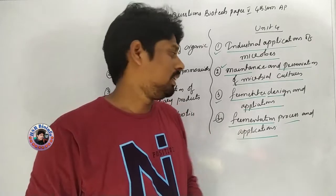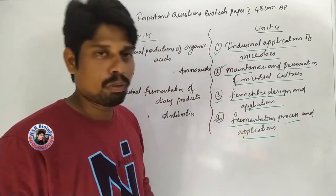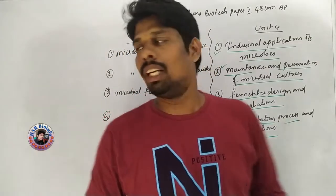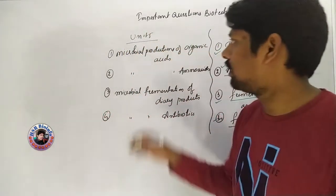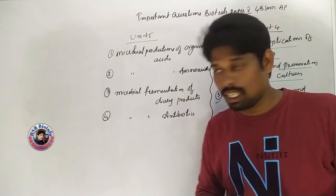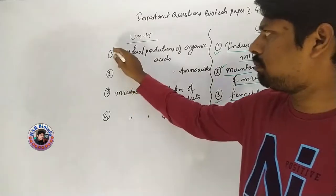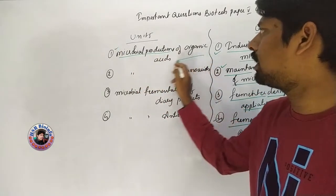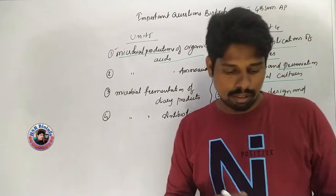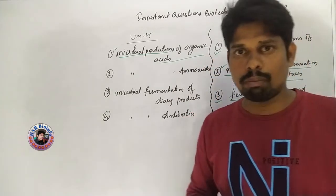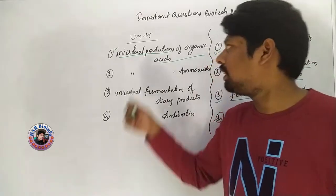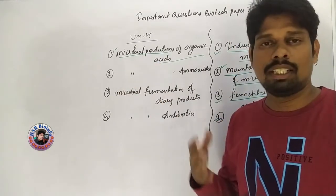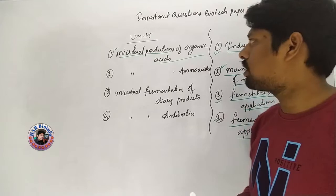There are 24 important questions in Unit 4. For the remaining unit, the first important question is the microbial production of organic acids. There are many organic acids produced through microbial production, with different microbes producing different organic acids.